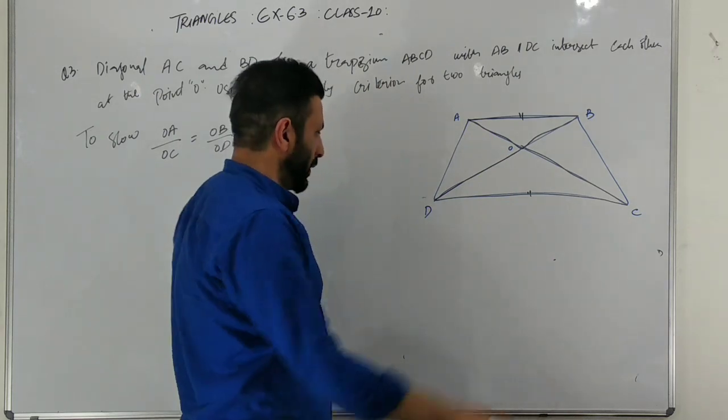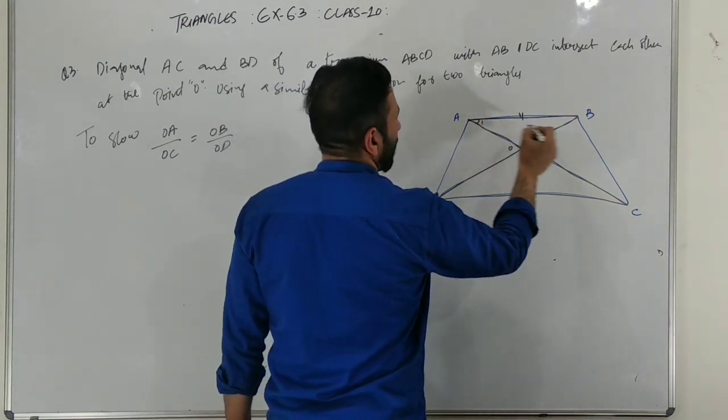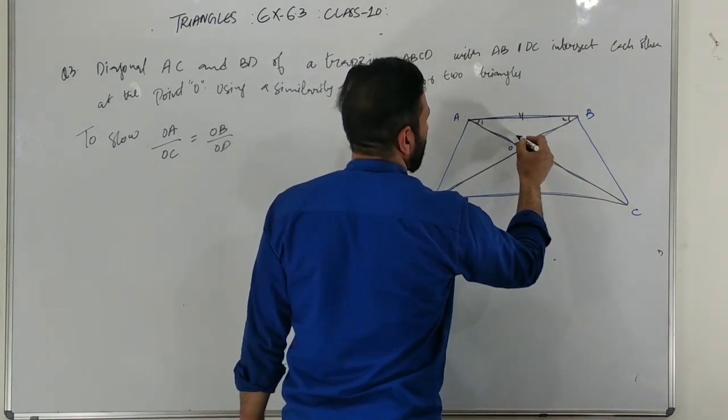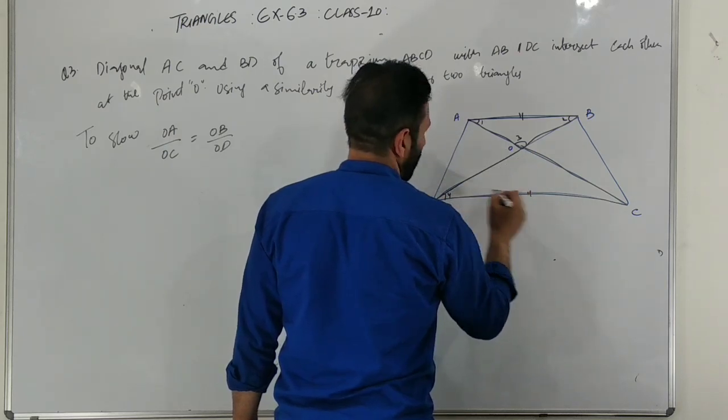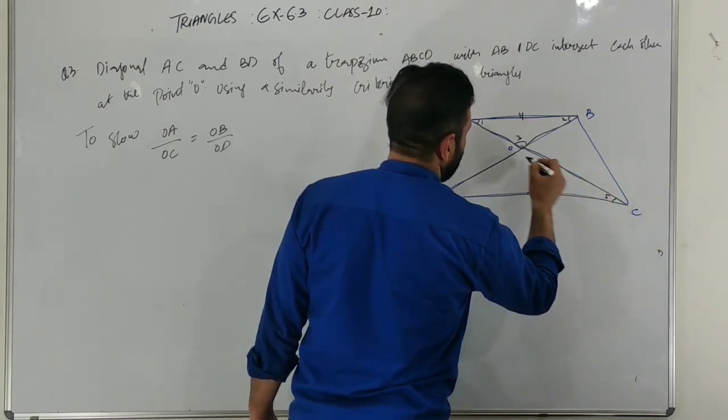We will use two triangles. Labeling the angles one, two, three, four, five, and six.